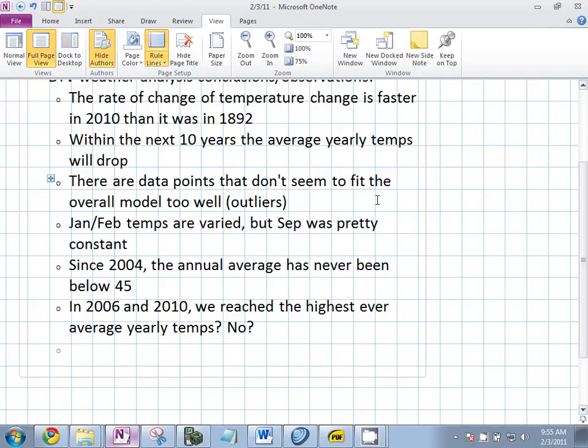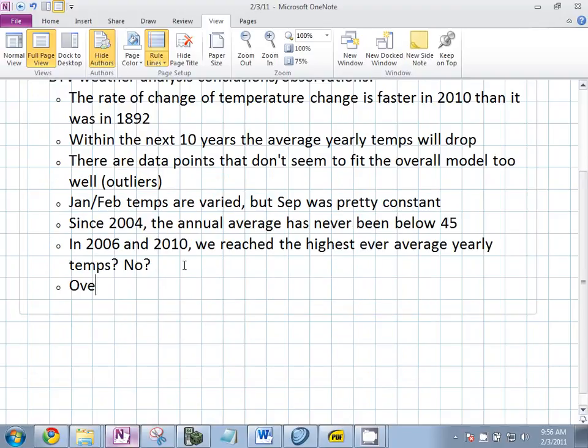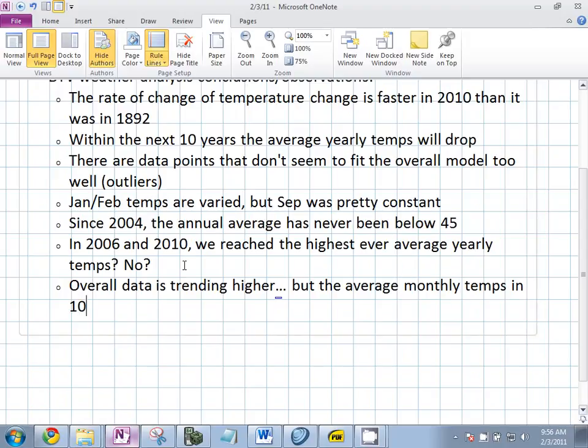Another observation. Macy. While the overall annual data is trending higher, you find that there is no difference between the 1900 temperature and the 2000 temperature. Overall data is trending higher, but you need to be more specific. The average temperature in January, February, March, April, for like 2010 and 1900, like overlap.